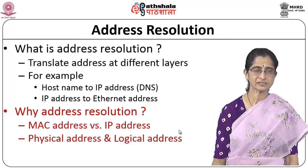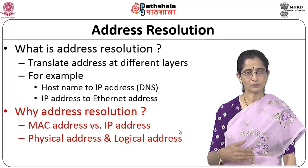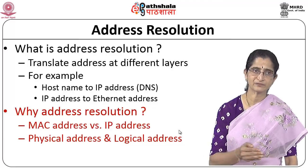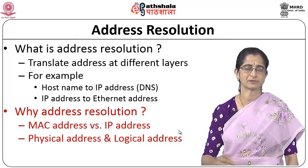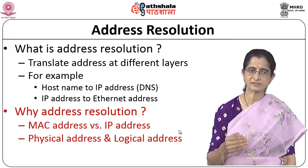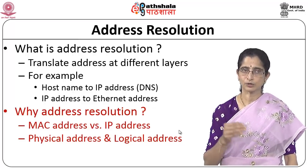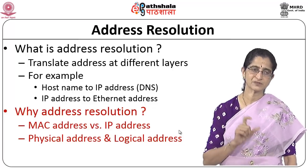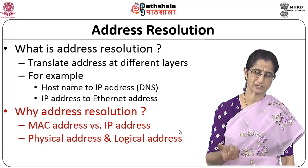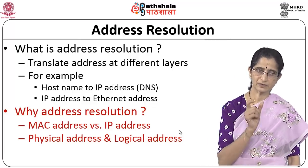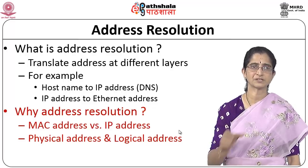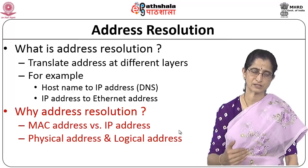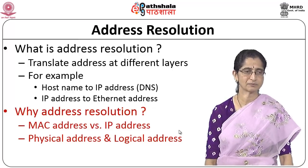IP addresses are assigned in a manner that allows you to identify the network part and node part separately. IP addresses are logical addresses, whereas the MAC address is a physical address. So we need to do a mapping between the physical address and the logical address — given an IP address, you need to know which physical machine corresponds to it. That is why we need this address resolution mechanism.